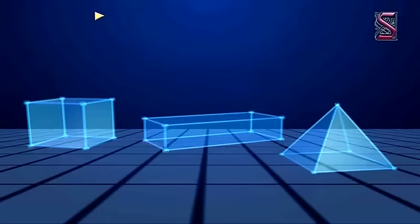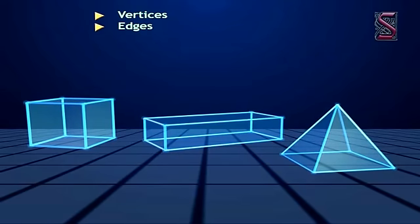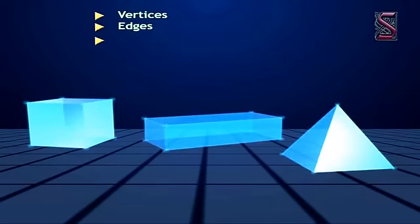All the three-dimensional objects have faces, edges, and vertices. The corners of a solid shape are called its vertices. The line segments of its skeleton are its edges, and its flat surfaces are its faces.